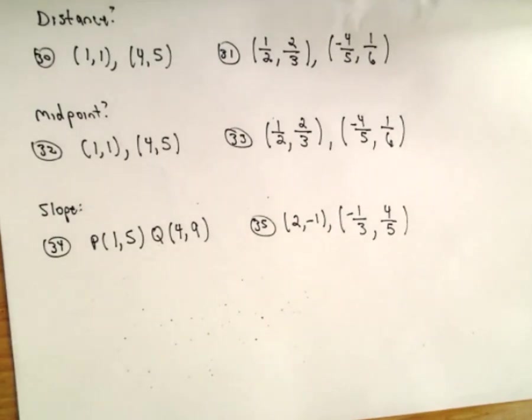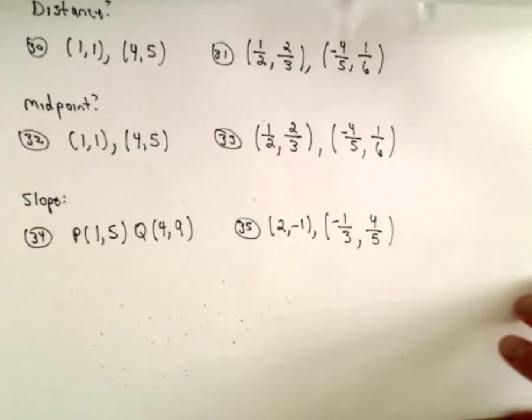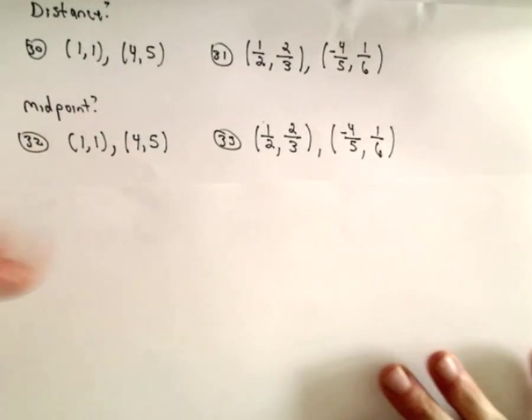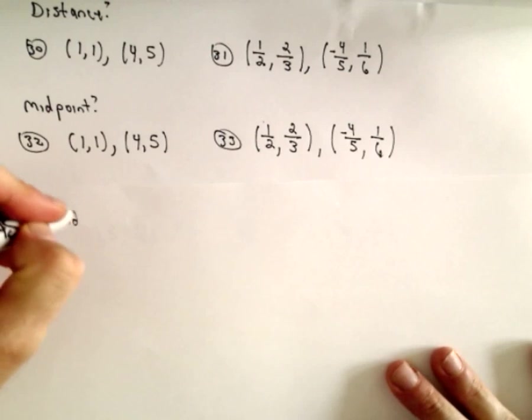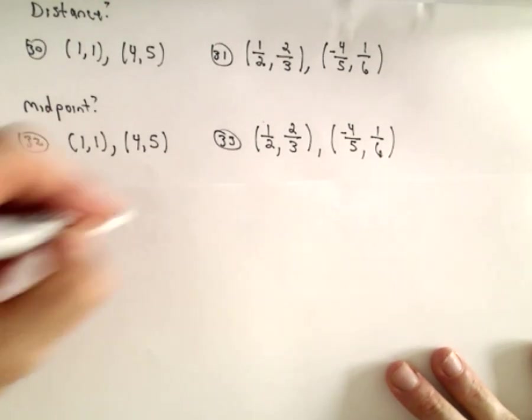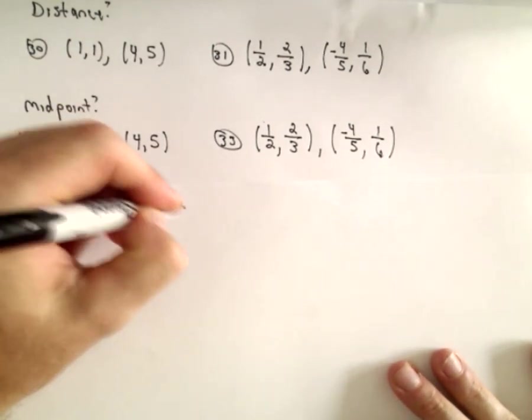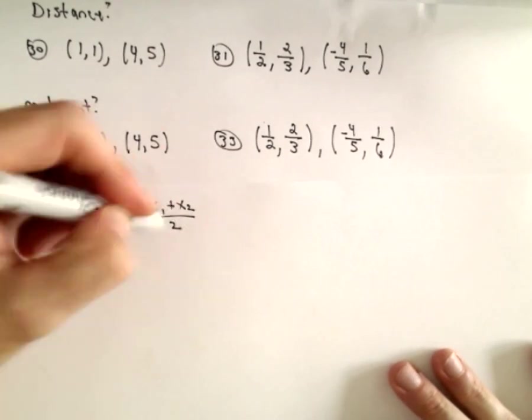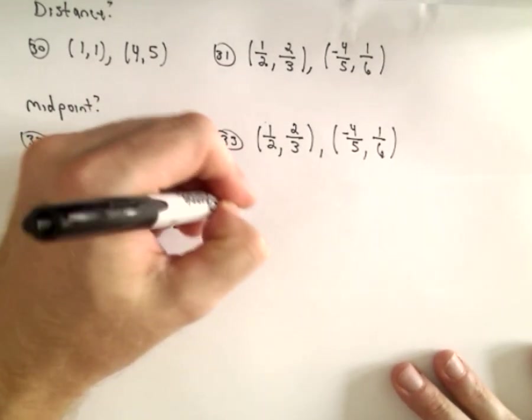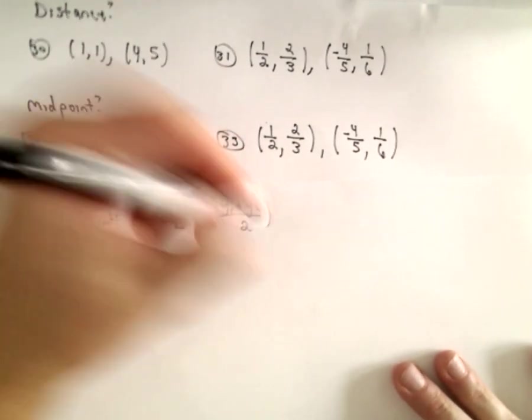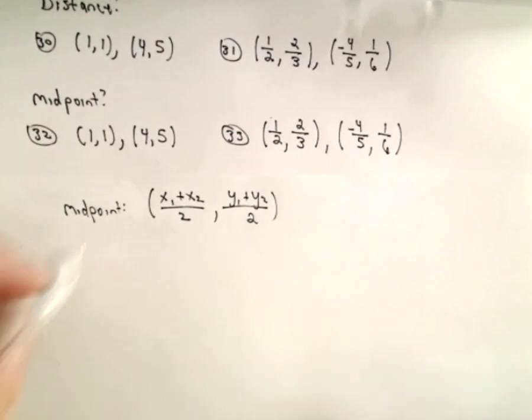So let's do the rest of these real quick. They're not too terrible. So midpoint, recall the midpoint, you just are basically finding an average. So the midpoint, we add the x-coordinates, divide by 2. We add the y-coordinates, and divide by 2.